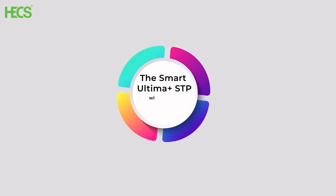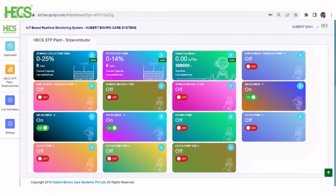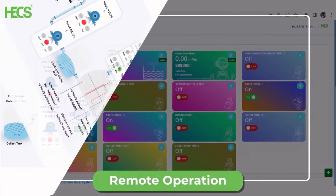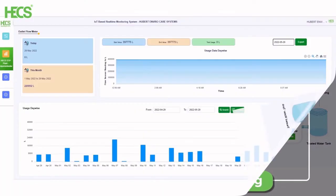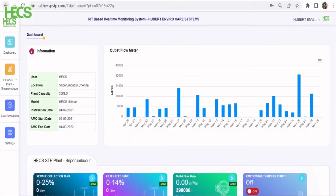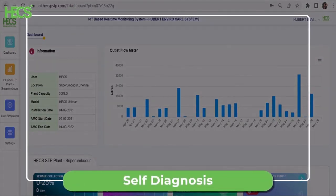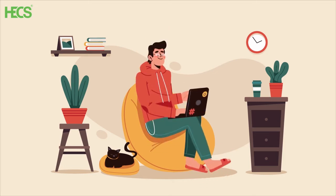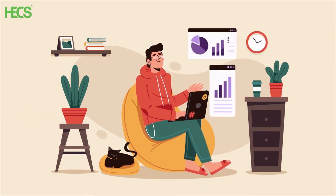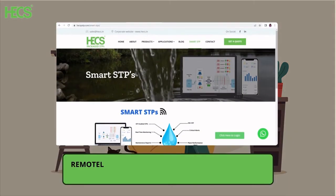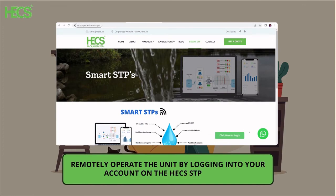The HEC's Ultima Plus Smart STP also comes with an IoT and artificial intelligence based monitoring system which provides remote operation, real-time remote monitoring, AI-powered reporting and self-diagnosis to the end client. The end user can access all the real-time information and even remotely operate the unit by logging into their account on the HEC's STP website.